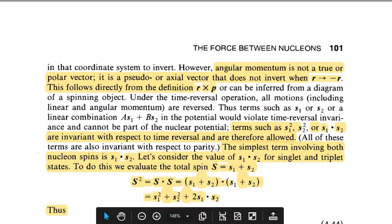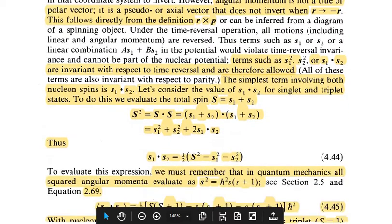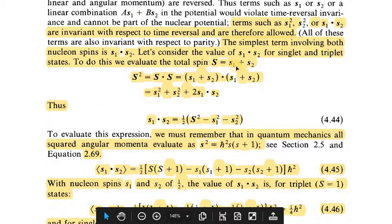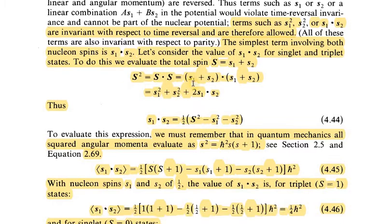The total spin is the sum of the individual spins: S = s₁ + s₂. S² we can write as S·S, then (s₁ + s₂)·(s₁ + s₂). Then we can write s₁² + s₂² + 2s₁·s₂. Thus s₁·s₂ = ½(S² - s₁² - s₂²).